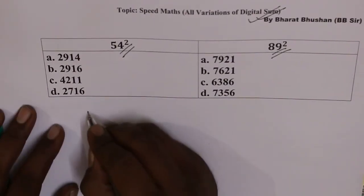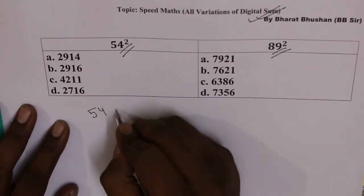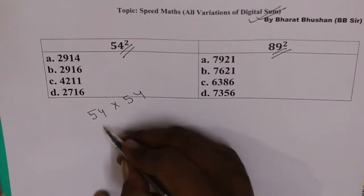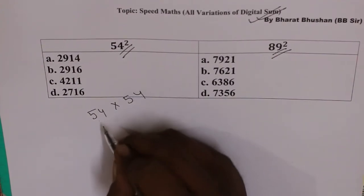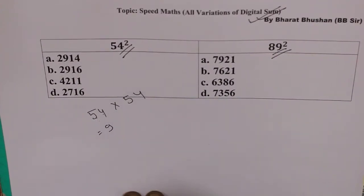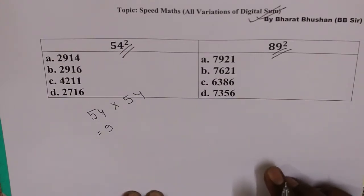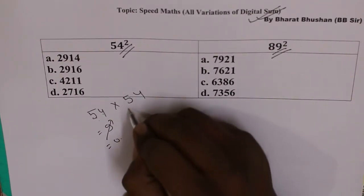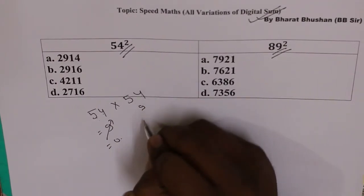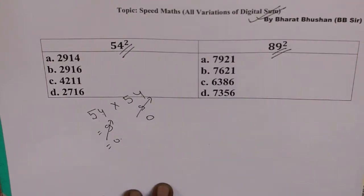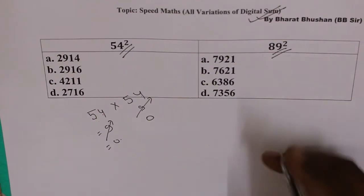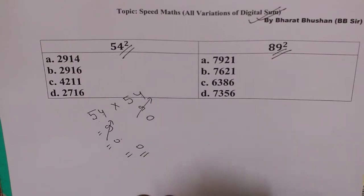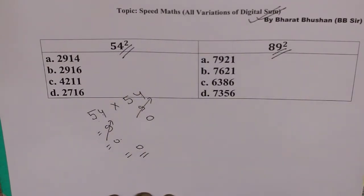Let's see how easily we can do this with the help of digital sum. 54 square means 54 into 54. Digital sum means we add the digits: 5 plus 4 is 9. We call digital sum to be elimination of 9, so 9 ko eliminate kar diya, giving 0. Similarly 5 plus 4 is 9, so digital sum is 0.